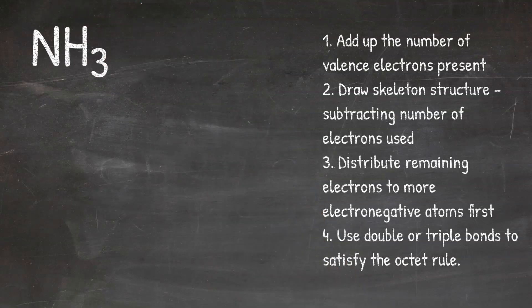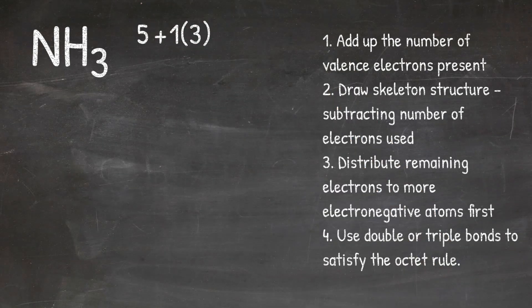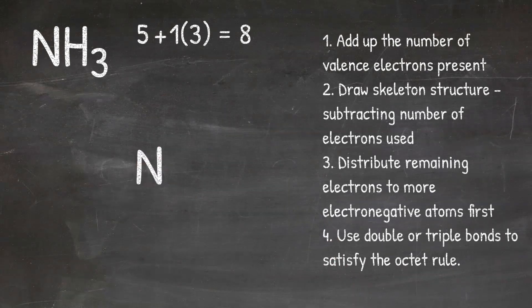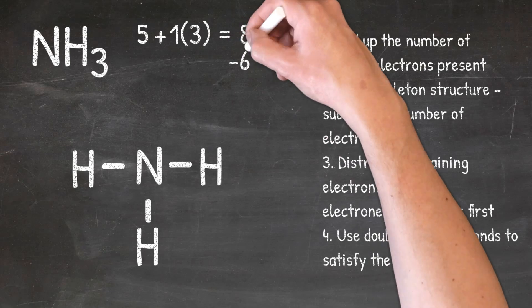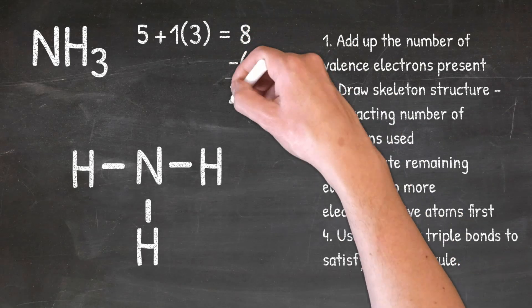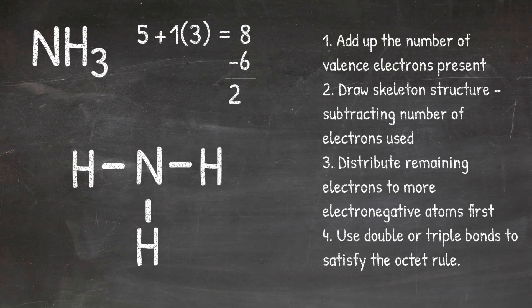In our second example, we will look at drawing the Lewis structure for NH3. Step number one: I add up the number of valence electrons present. Nitrogen has five valence electrons, and hydrogen has one valence electron, but I have three hydrogens, so I multiply that one by three. When I add those together, I get a total of eight valence electrons. Moving to step two, I draw my skeleton structure. Nitrogen is the first element in the formula, so I put nitrogen in the middle, then attach my three hydrogens to nitrogen using single bonds. I count three single bonds at two electrons each — six electrons used — and subtract six from eight, leaving two electrons remaining.